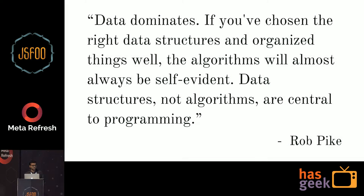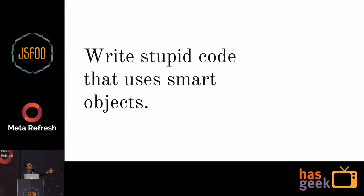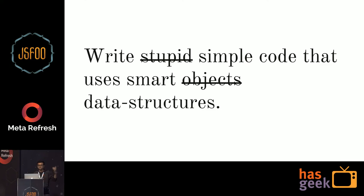I'd like to start with this quote from Rob Pike, who is well known for his work with UNIX and Bell Labs. He gave five rules of programming. This is rule number five: 'Data dominates. If you have chosen the right data structures and organized things well, the algorithms will almost always be self-evident. Data structures, not algorithms, are central to programming.' People translate this to 'write simple code that uses smart data structures.' The point is that data structure is important when writing applications.